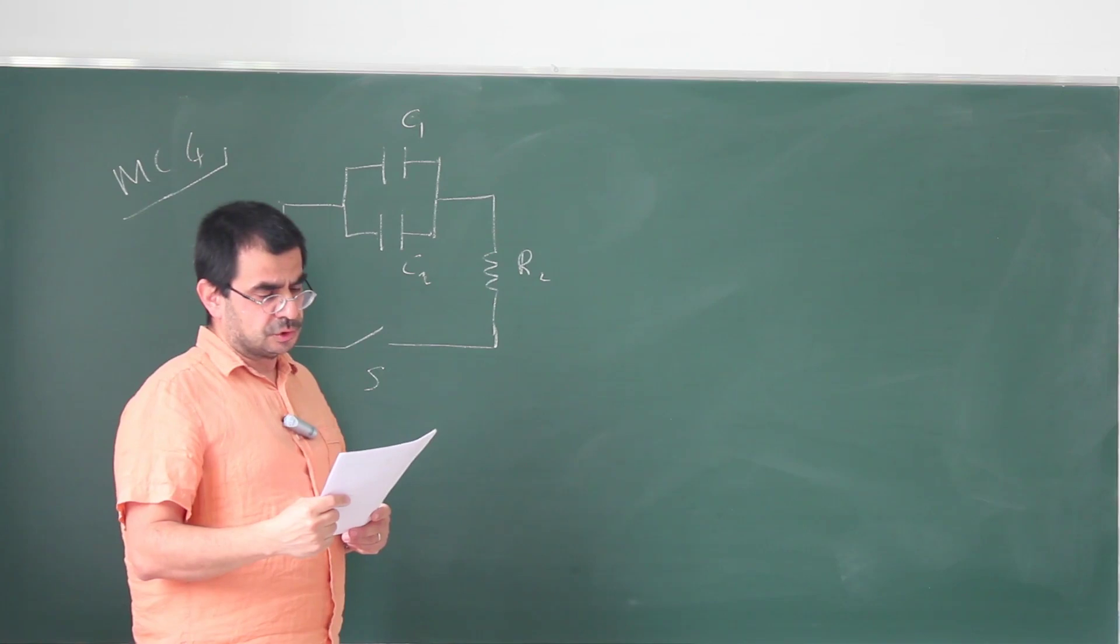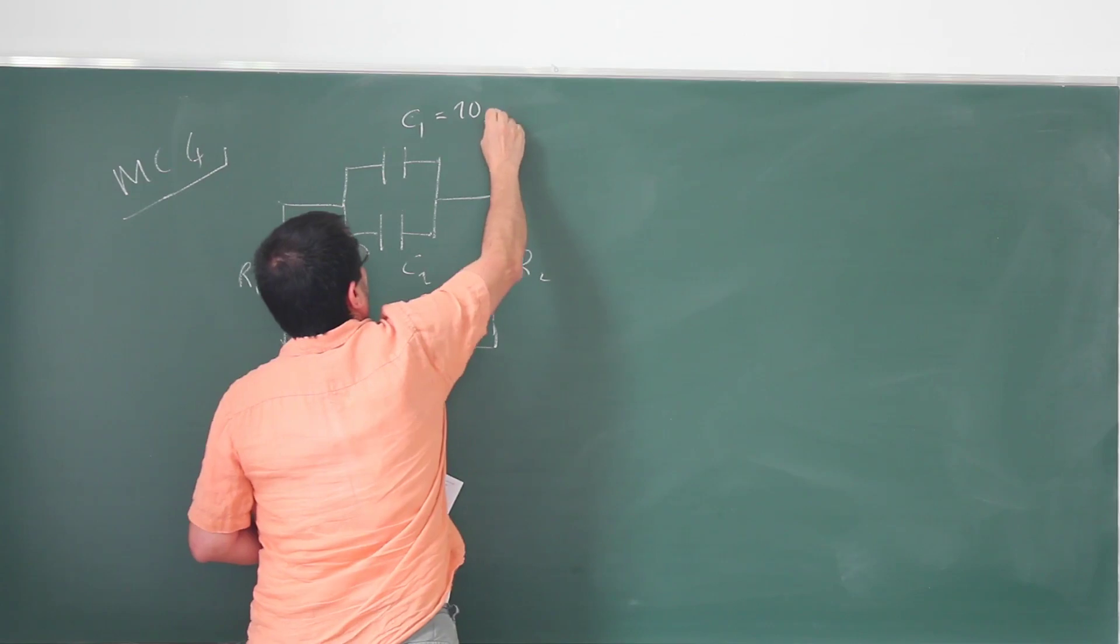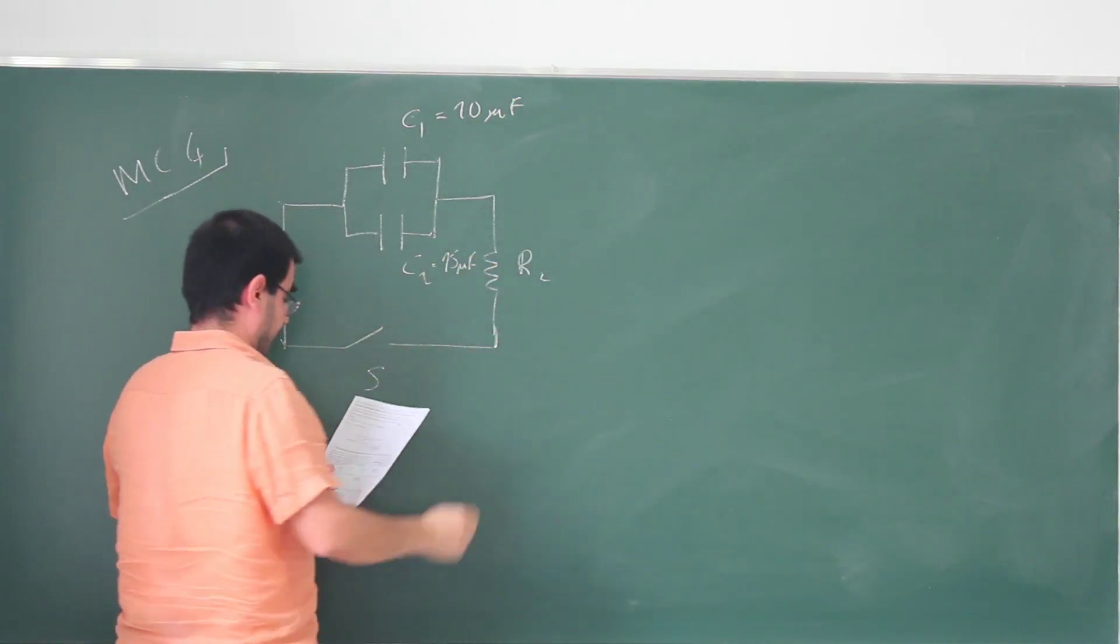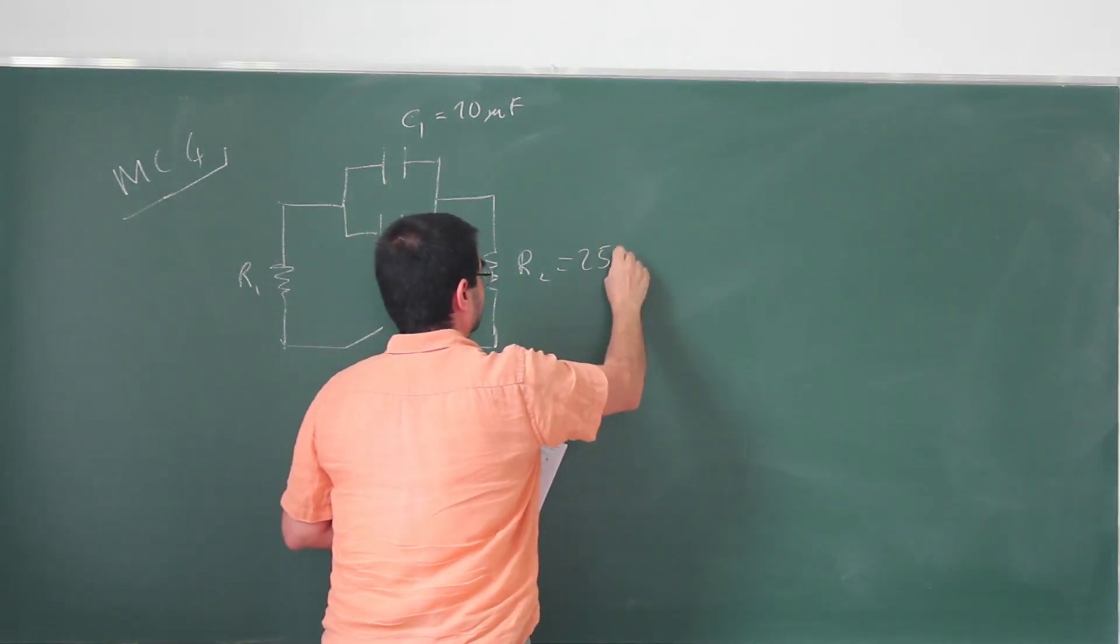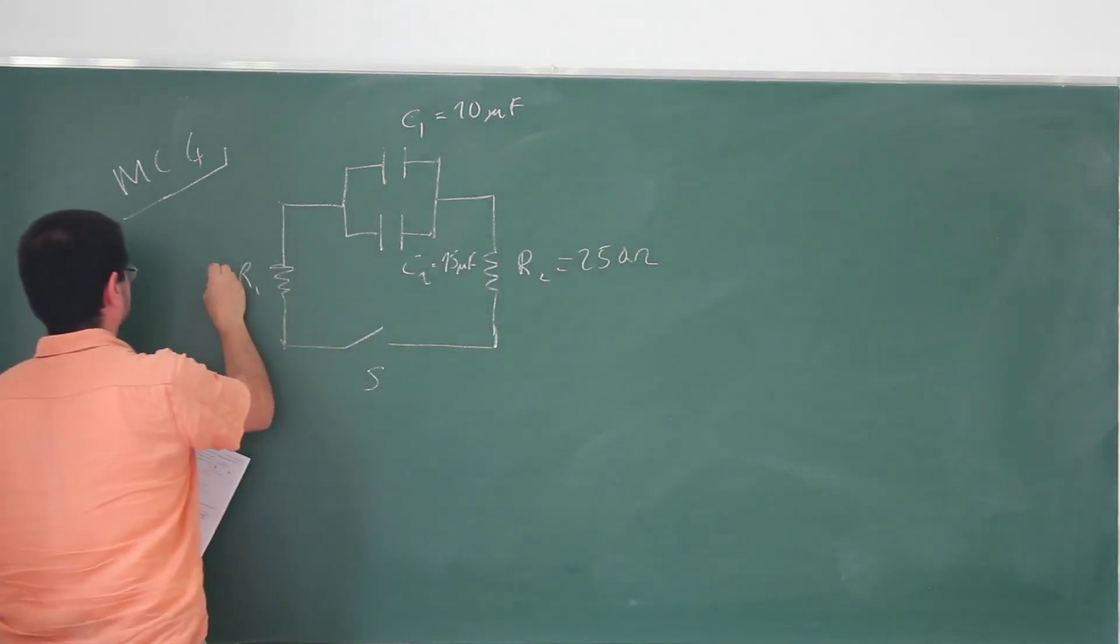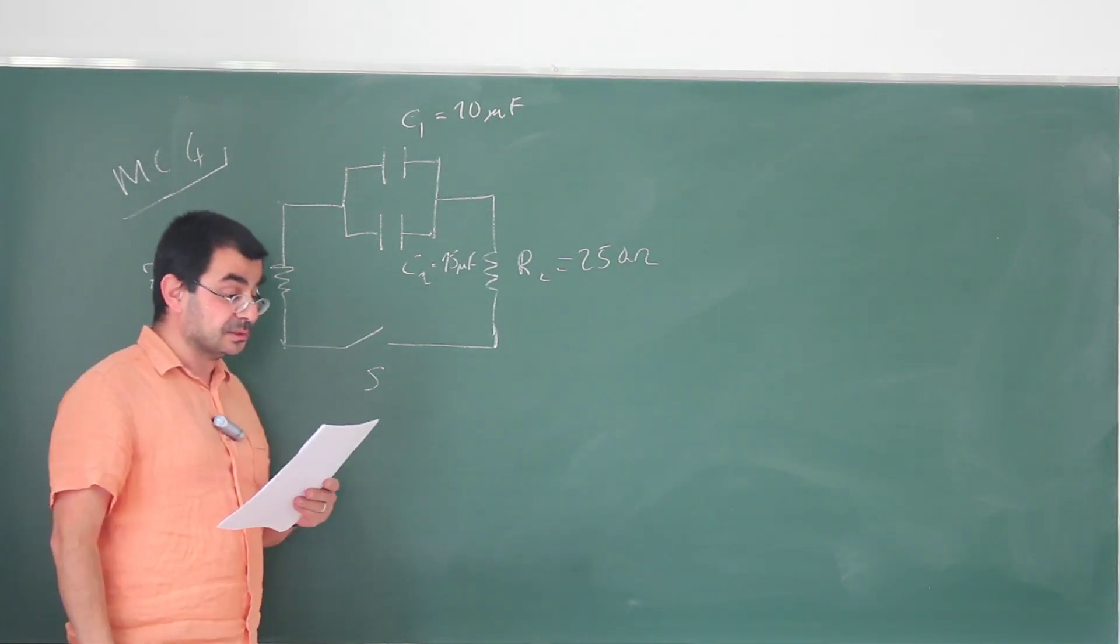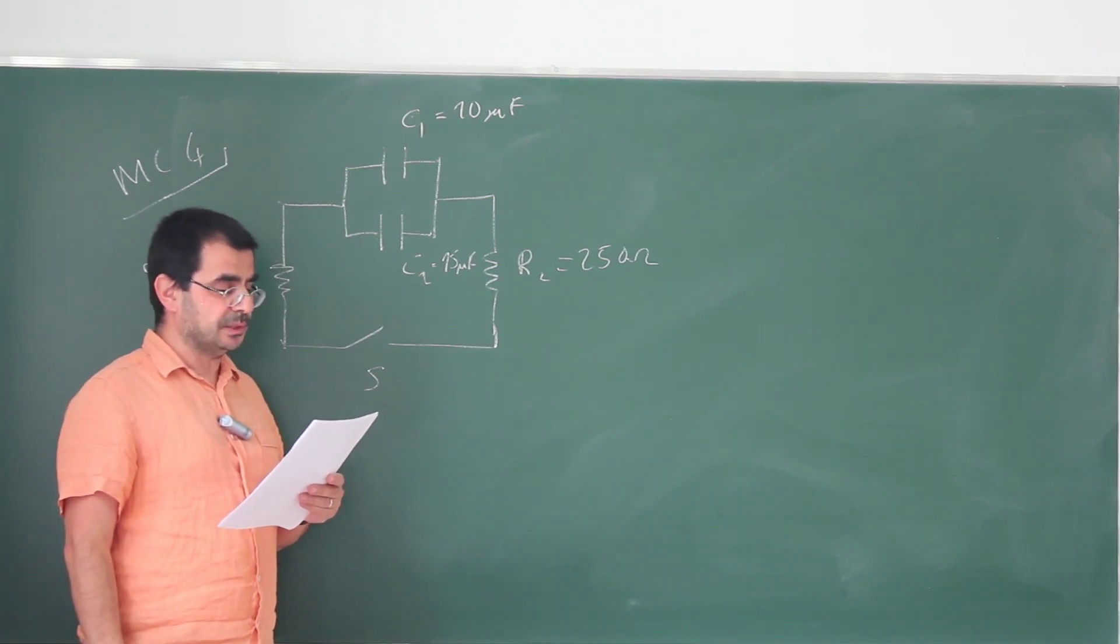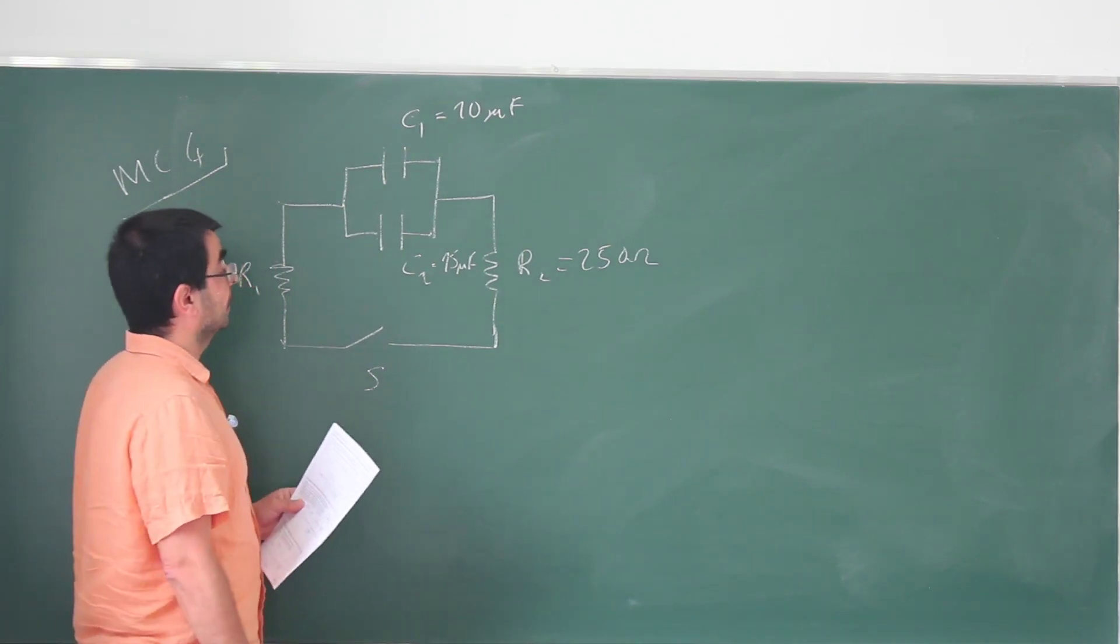Consider an RC circuit shown in the figure, where these are 10 and 15 microfarads. The resistors are 250 ohms and 750 ohms. The capacitors initially have some charge. After the switch is closed, how long will it take for the total charge on the capacitor to decrease to one half of the initial value?